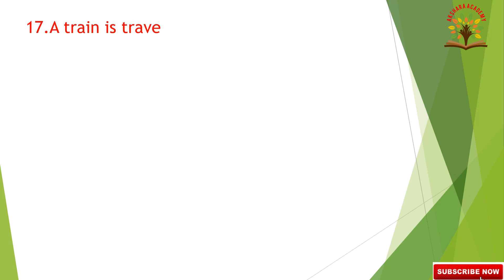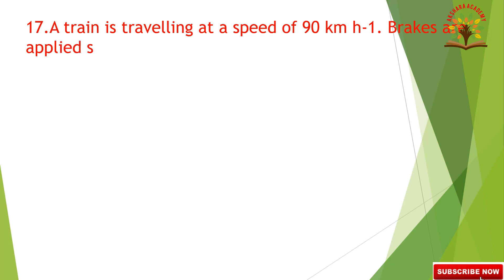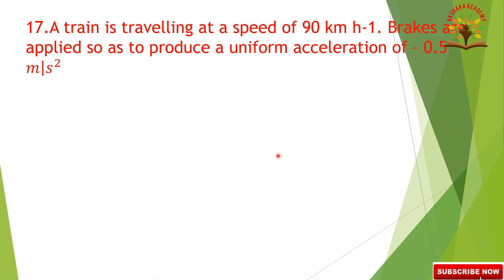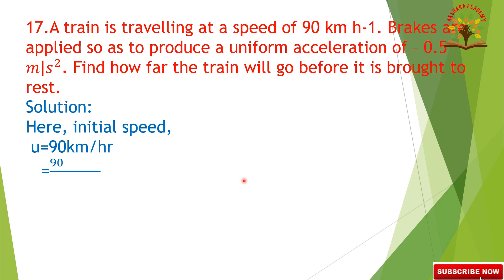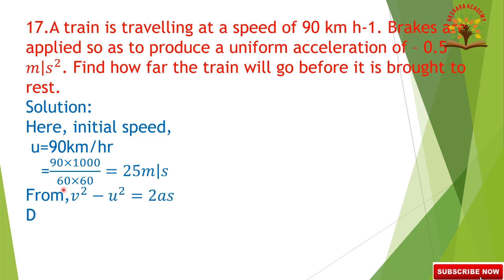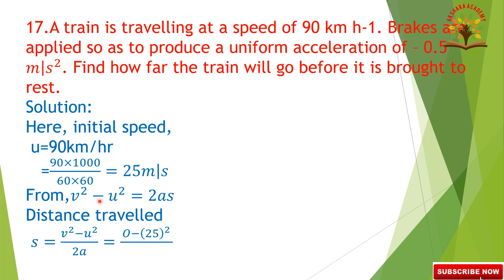Question 17: A train is travelling at a speed of 90 kilometer per hour. Brakes are applied to produce a uniform acceleration of minus 0.5 meters per second square. Find how far the train will go before it is brought to rest. The given speed is 90 km/h. Converting to meters per second: 90 into 1000 by 3600 equals 25 meters per second. From the third equation, S equals V square minus U square by 2A.